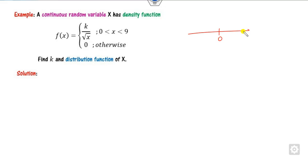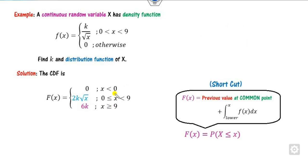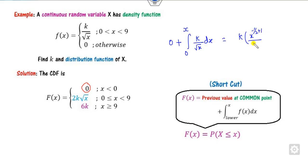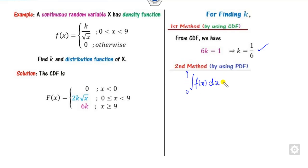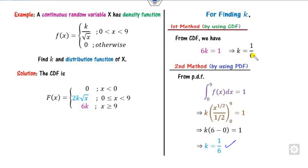Another example with domain 0 to 9. There are 3 intervals. First value is always 0. For the second case: 0 plus integral from 0 to x of k/√x. Since k is outside and the exponent is -1/2 + 1 = 1/2, the integral is 2k√x evaluated from 0 to x, giving 2k√x. For the last case, the common value is 9: substituting 9 gives 2k√9 = 6k. Since 6k = 1, we get k = 1/6. Alternatively, you can use the PDF property that integral over the domain equals 1, which gives the same answer.